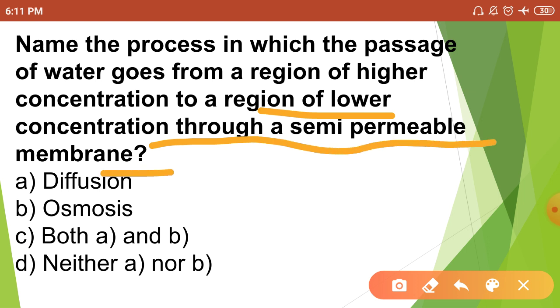What is this process? Options are: diffusion, osmosis, both A and B, neither A nor B. The correct answer is option B, osmosis.